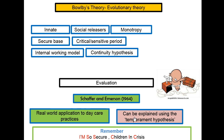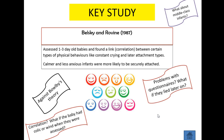As a limitation, attachment can also be explained using the temperament hypothesis, not just the evolutionary hypothesis. The temperament hypothesis basically means personality — we all have different personalities as babies. Belskin and Roving found that when they looked at one-to-three-day-old babies, they found...